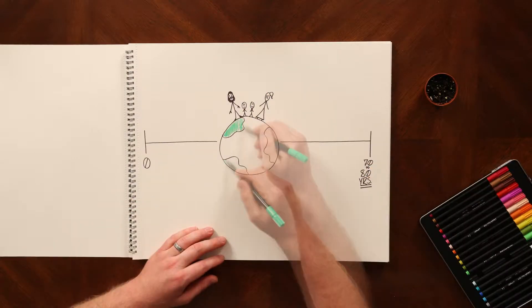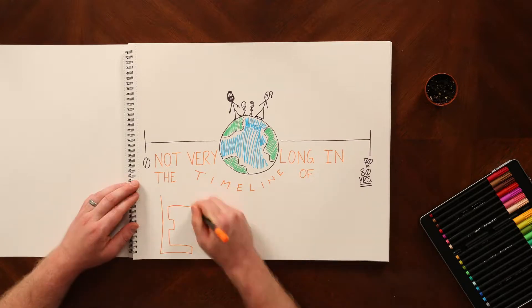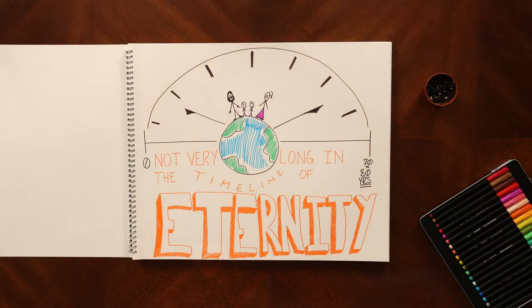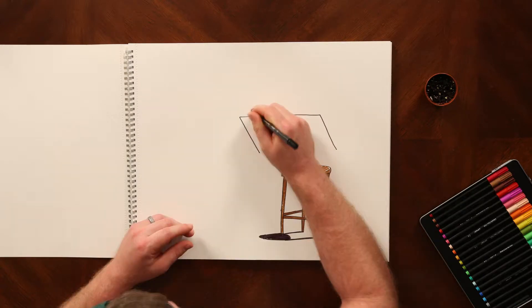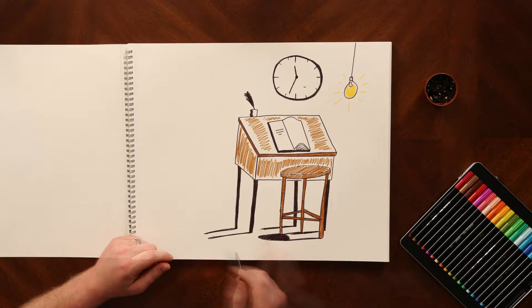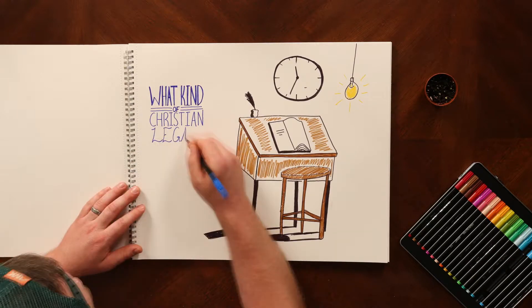You and I can expect to spend 70 to 80 years living on earth. That's truly not very long compared to the timeline of eternity. And as Christians, we know we are called to make the most of our time to reach people for Christ. But have you ever thought about what kind of Christian legacy you will leave behind for your family and future generations?